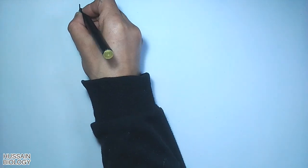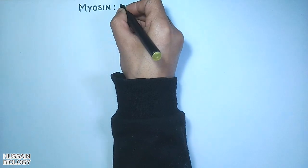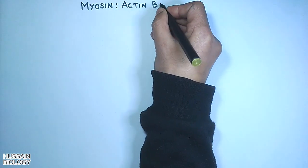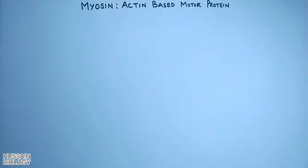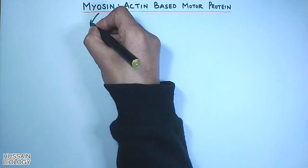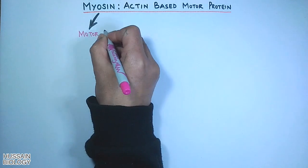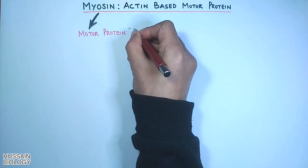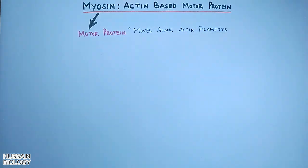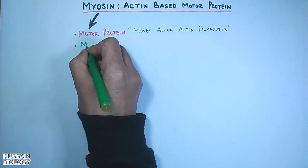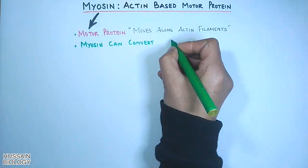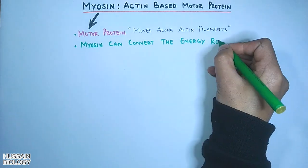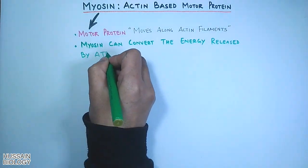In this video we'll be discussing the myosin, which is the actin-based motor protein. This motor protein moves along actin filaments and this movement is aided by ATP, since myosin can convert the energy released by ATP hydrolysis into mechanical work.